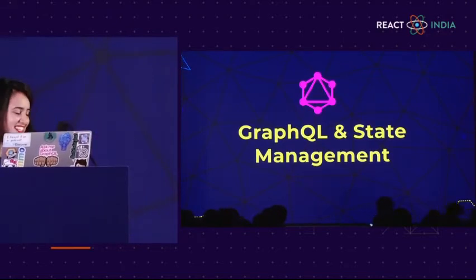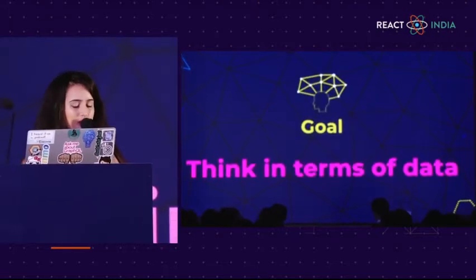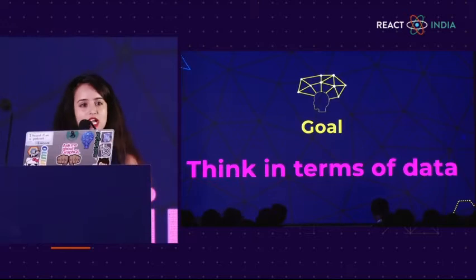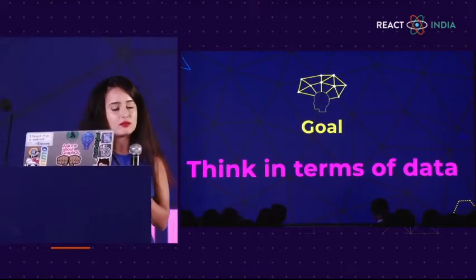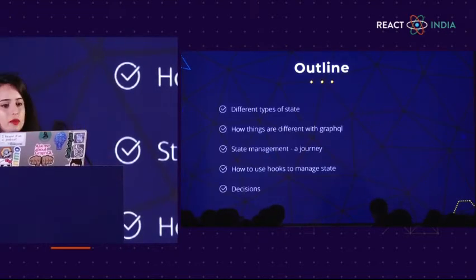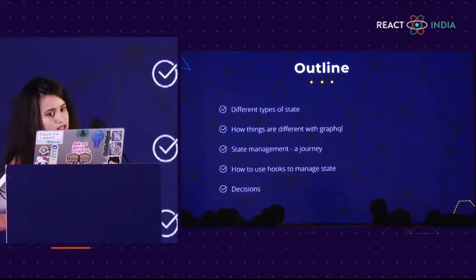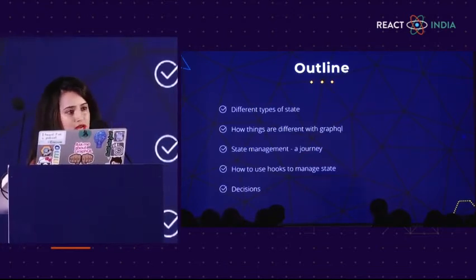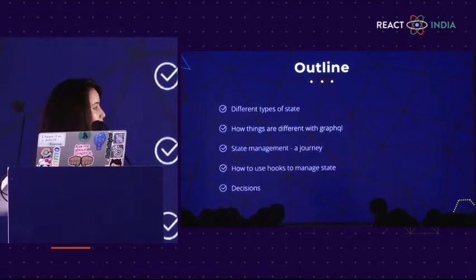Let's get started. I'm going to be talking about GraphQL and state management. My goal today is to let you think in terms of data, help you understand how hooks, GraphQL, and state management come into action, and help you draw the link between these three technologies. I want to give you enough information so that when you go back, you can experiment with hooks and GraphQL on your own. I'll talk about the different types of state, how things are different with a GraphQL API versus a REST API, state management and how to think about it, how to use hooks to manage state, and what decisions you can use to think about which state management you should use.